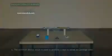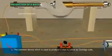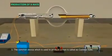How are X-rays produced? The common device used to produce X-rays is called the Coolidge tube.